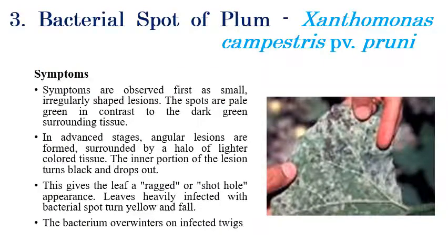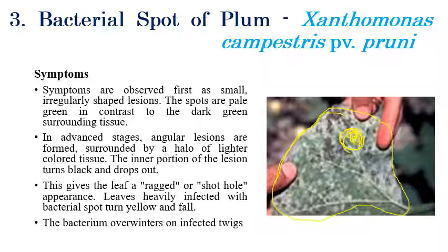The third disease is bacterial spot of plum, caused by Xanthomonas campestris pathovar pruni. Symptoms can be seen on leaves — small, irregular-shaped lesions or spots appear on leaves. The spots are surrounded by irregular dark-colored lesions, and these lesions are surrounded by a yellow halo, which is a very important diagnostic feature. Some white-colored appearance may also be observed.